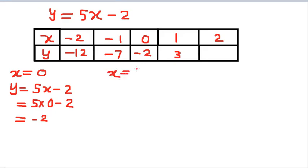5 into 0 is 0, so the answer is minus 2. Therefore this value is minus 2. For x equals 2, then y equals 5x minus 2. 5 into 2 minus 2, 5 into 2 is 10, 10 minus 2 is 8.